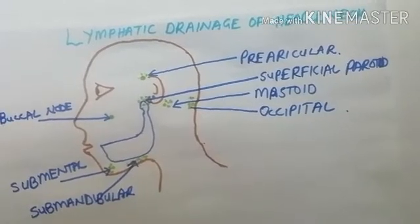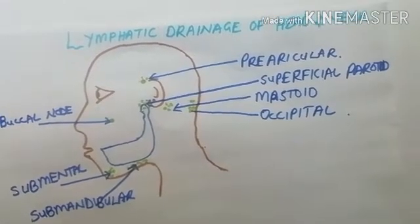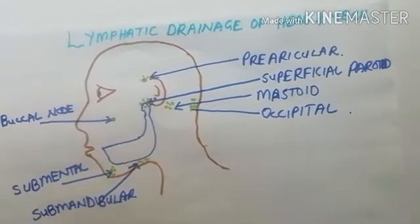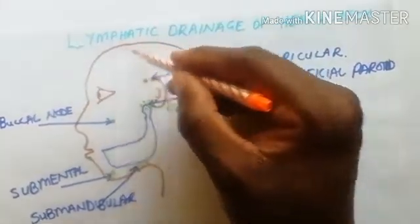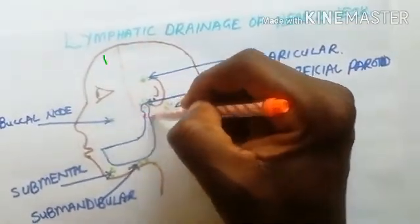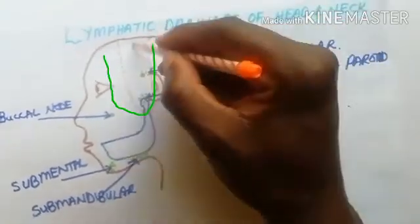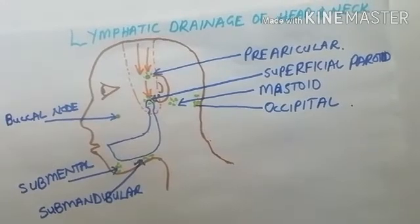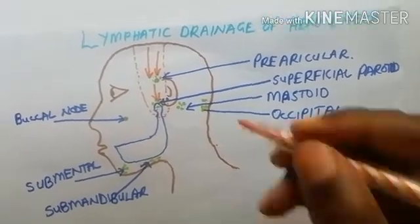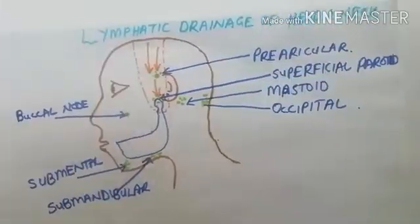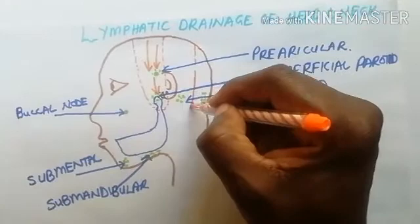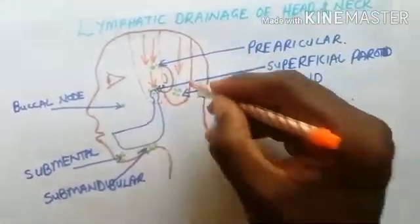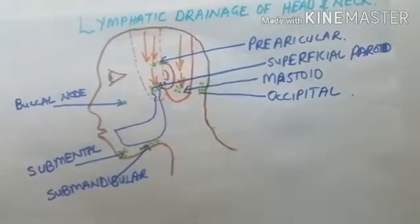Now we're in a position to look at the areas from which these lymph nodes drain. From the scalp in the temporal region, extending from the outer canthus of the ear to the part of the external ear, it is drained by the pre-auricular and the superficial parotid lymph nodes. The external ear and this part of the scalp is drained by the mastoid group of lymph nodes.